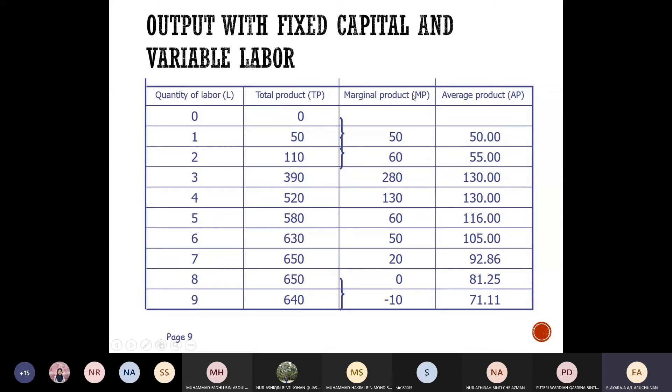The marginal product is 50 minus zero, and then this difference is one minus zero, so you get one. So 50 over one, you get 50.